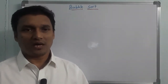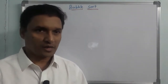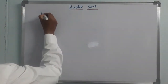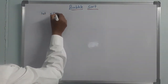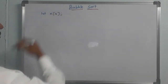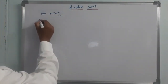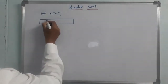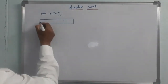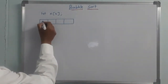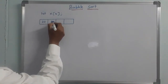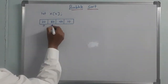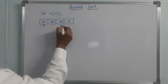For the bubble sort process, let's take one example for a clear explanation. First, we declare an array. For example, an array of index 4. We have array elements: 20, 80, 50, 10. Their positions are index 0, 1, 2, and 3 — that is x[0], x[1], x[2], x[3].